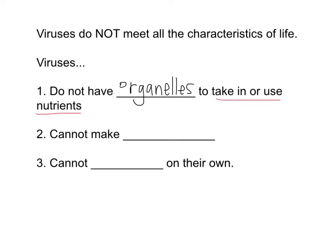Secondly, viruses cannot make proteins. We know from our central dogma unit that we take DNA, make mRNA from that, and build proteins from that. Living things are able to build those proteins, but viruses are unable to do that — they can't build proteins, which we know now do a lot in our bodies.